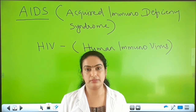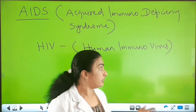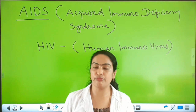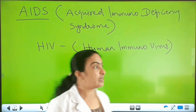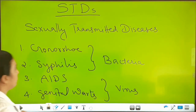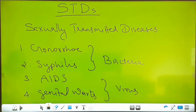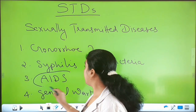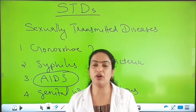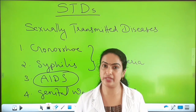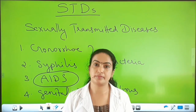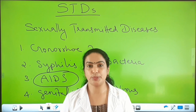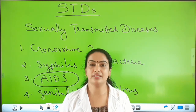AIDS is incurable, and no definite cure has been found for AIDS so far. The major STDs are gonorrhea, syphilis, AIDS, and genital warts. Out of these, AIDS is very dangerous — it is more dangerous because AIDS leads to death, and it is incurable. That's all about STDs. Hope you understood everything about STDs. Thank you.